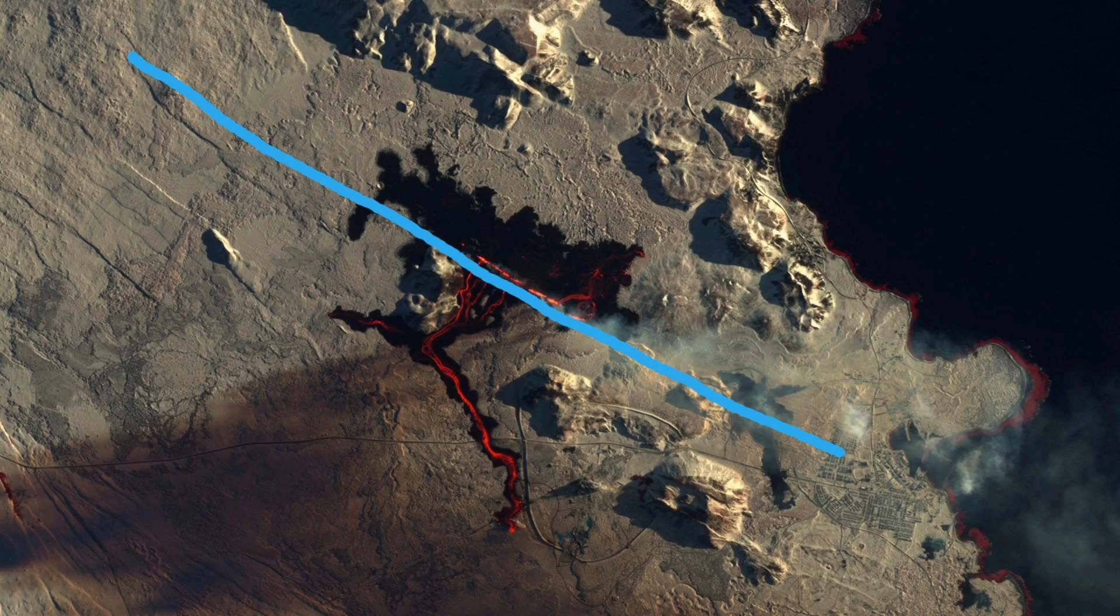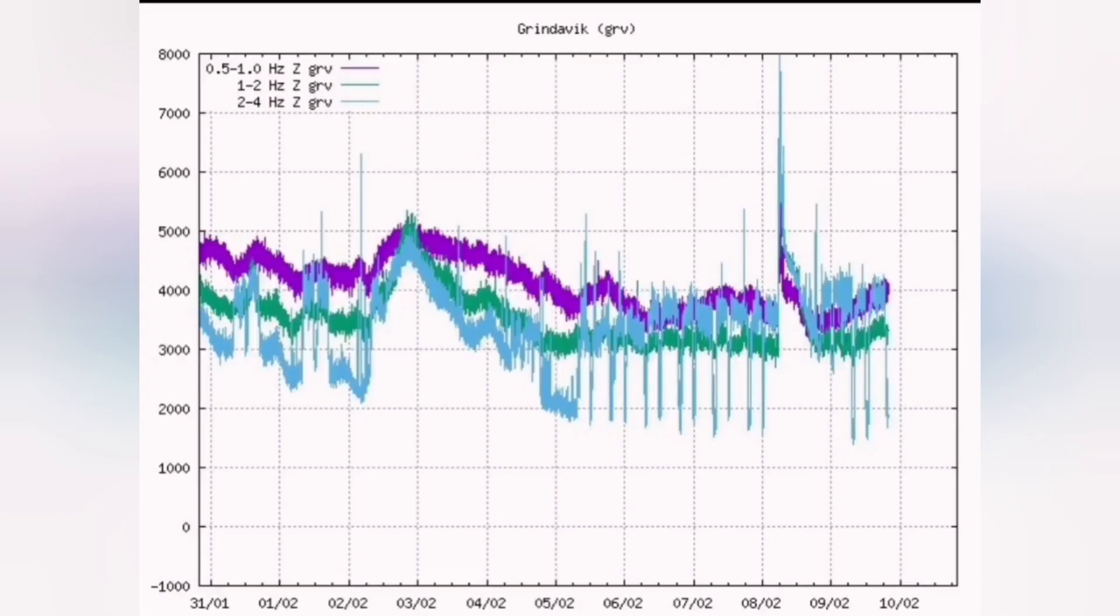This is my estimate. This is all along that dike that we are seeing - the magma dike draining Svartsengi near those hills in the lower part of the image, and through a sill which is connecting to them.